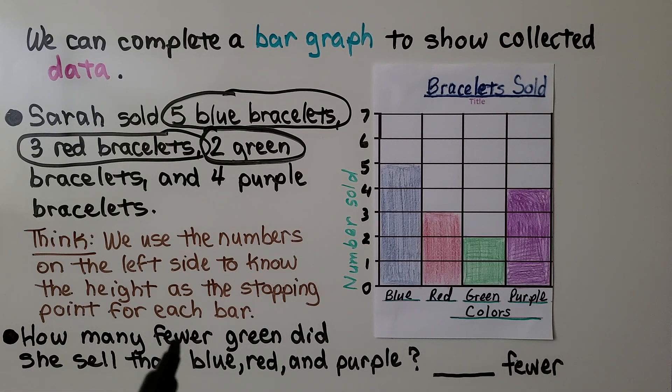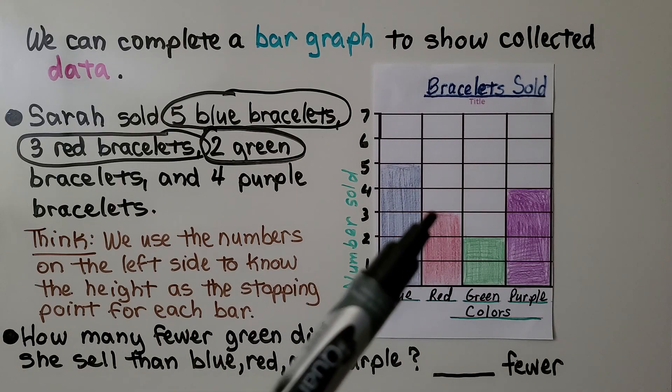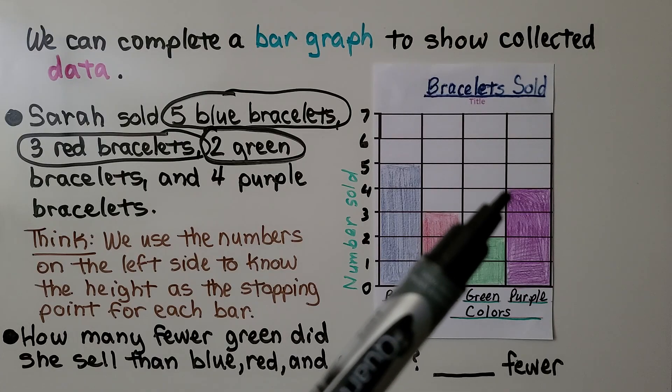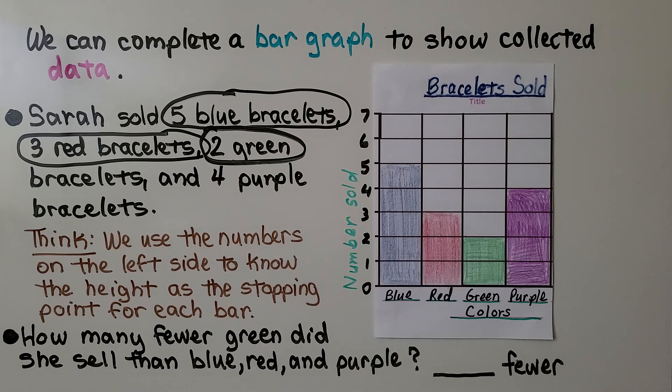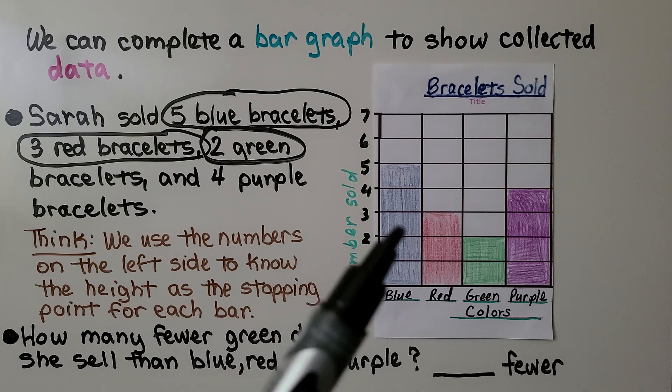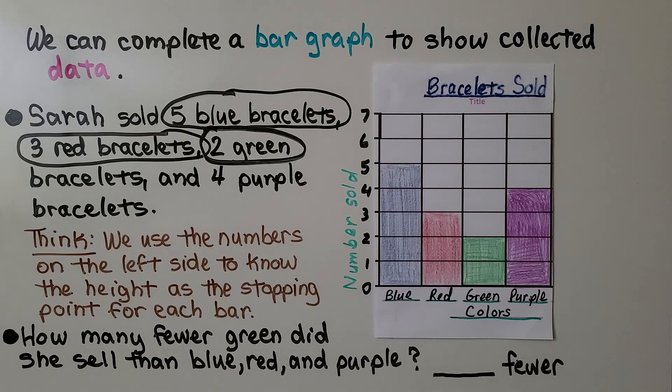How many fewer tells me that we're going to need to subtract. We need to compare green, the two green, to the total of the blue, red, and purple. So now we need to total the blue, red, and purple. The blue is five. The red is three. Five plus three is eight. Purple is four. Eight plus four is twelve. That means we're comparing twelve and two. And twelve minus two is equal to ten, which means it's ten fewer.